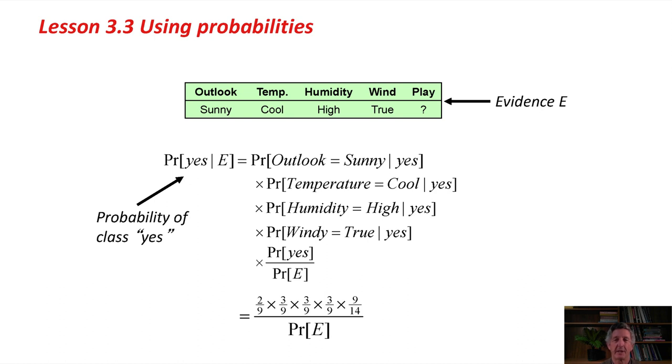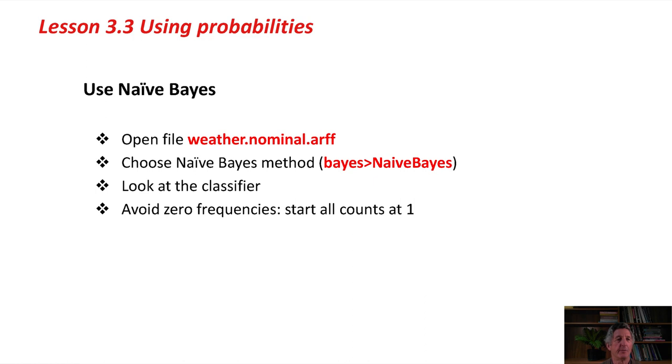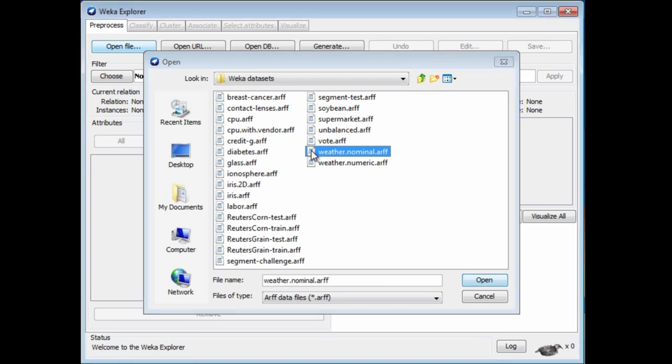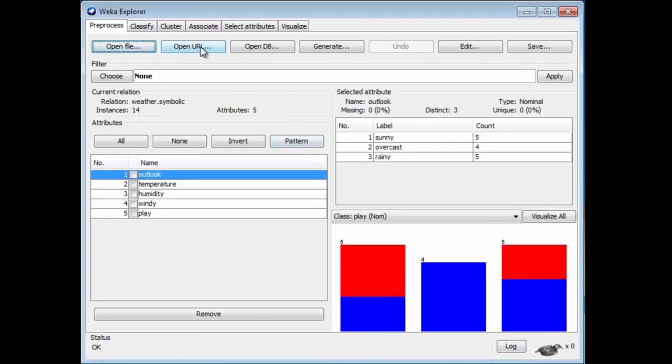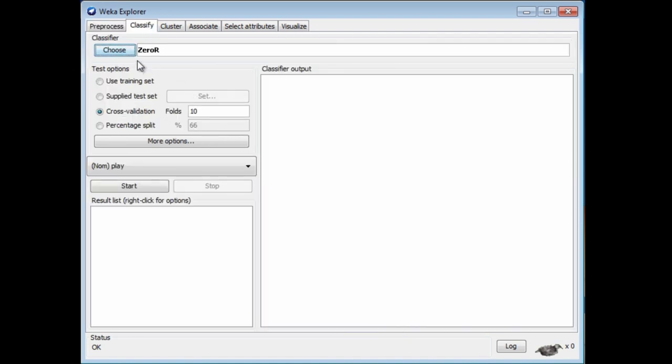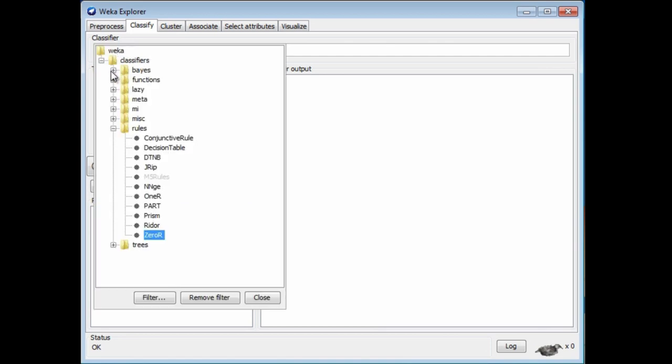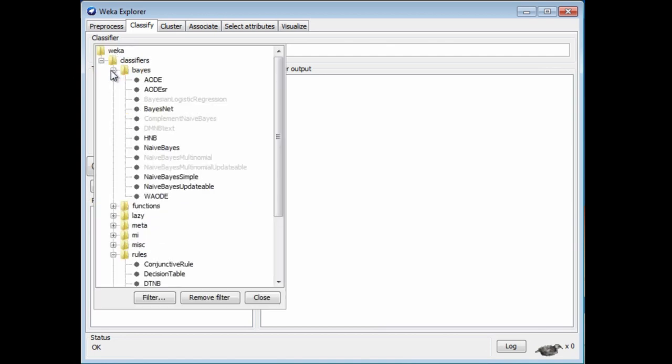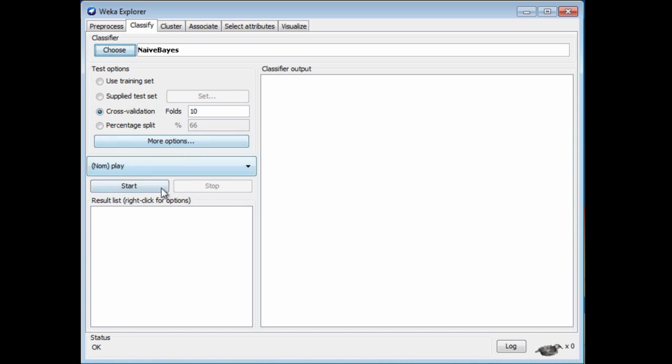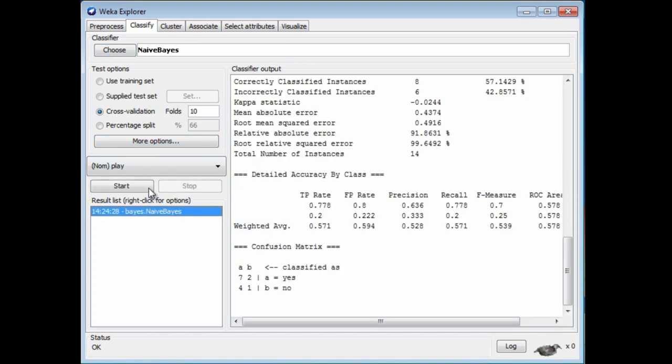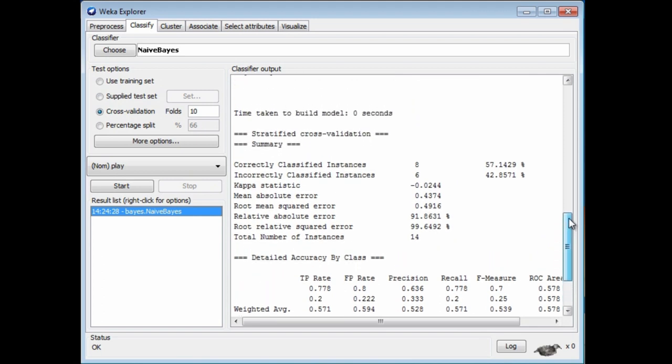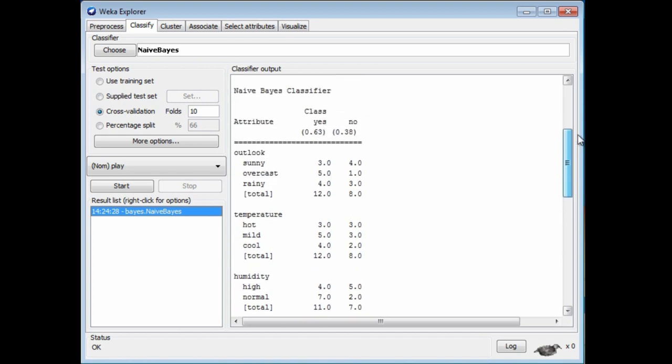It's very simple when you look at it in Weka as well. I'm going to go to Weka here. I'm going to open the nominal weather data, which is here. We've seen that before, of course, many times. I'm going to go to Classify. I'm going to use the Naive Bayes method. It's under this Bayes category here. There's a lot of implementations of different variants of Bayes. I'm just going to use the straightforward Naive Bayes method here. Then I'll just run it. This is what we get.